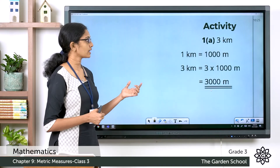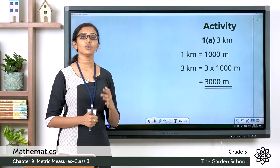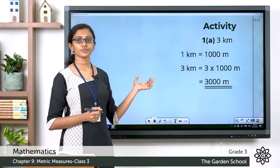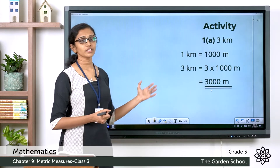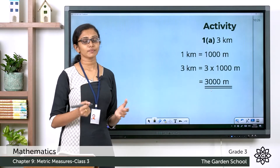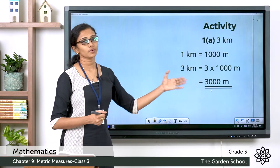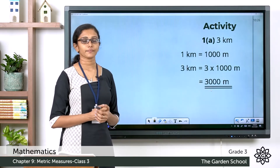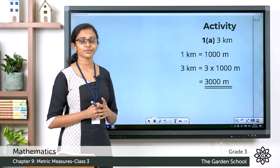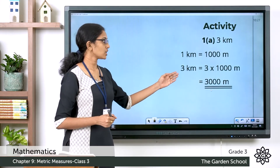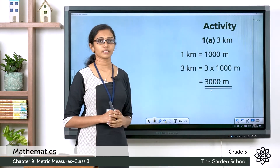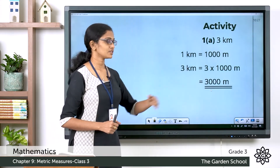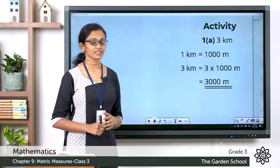Now let's discuss the questions. Question 1a: convert 3 kilometers into meters. You are converting from a bigger unit to a smaller unit, so you multiply. We know 1 kilometer equals 1000 meters, so 3 kilometers = 3 × 1000 meters = 3000 meters.